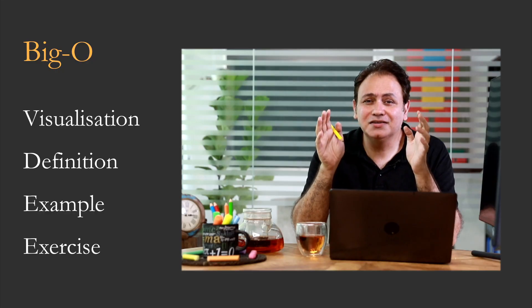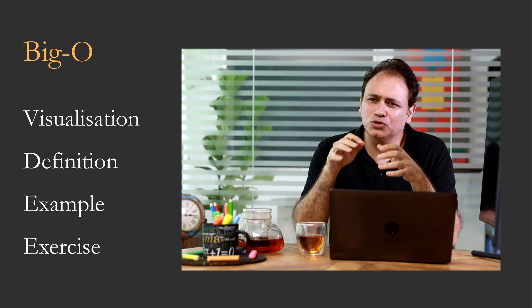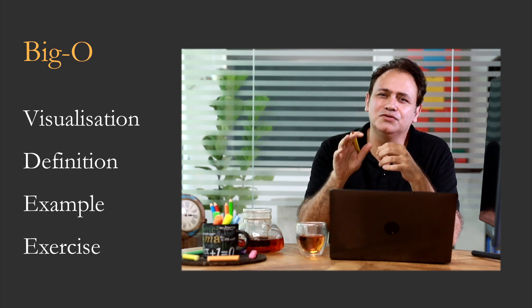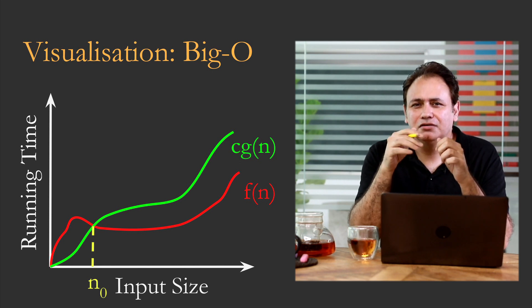So now let's dive into Big O notation. We've talked about it a little bit, but let's dive in a little bit. We're going to go through it by looking at visualization first, and then we'll try and turn that visualization into a definition. We'll go through an example, and then I'll leave you with an exercise. So let's start by looking at the visualization.